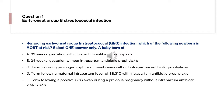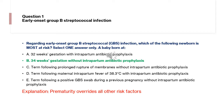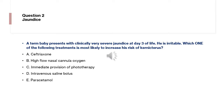The answer options are: 32 weeks with intrapartum antibiotic prophylaxis; 34 weeks without intrapartum antibiotic prophylaxis; term following prolonged rupture of membranes without antibiotic prophylaxis; or term following maternal intrapartum fever with antibiotic prophylaxis. The correct answer is 34 weeks gestation without intrapartum antibiotic prophylaxis, because prematurity overrides all other risk factors, especially without intrapartum antibiotic prophylaxis.